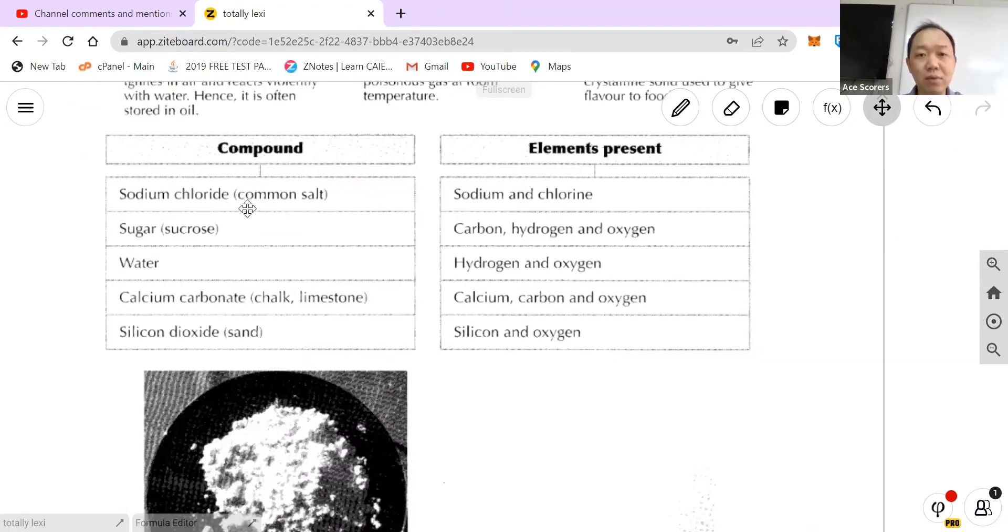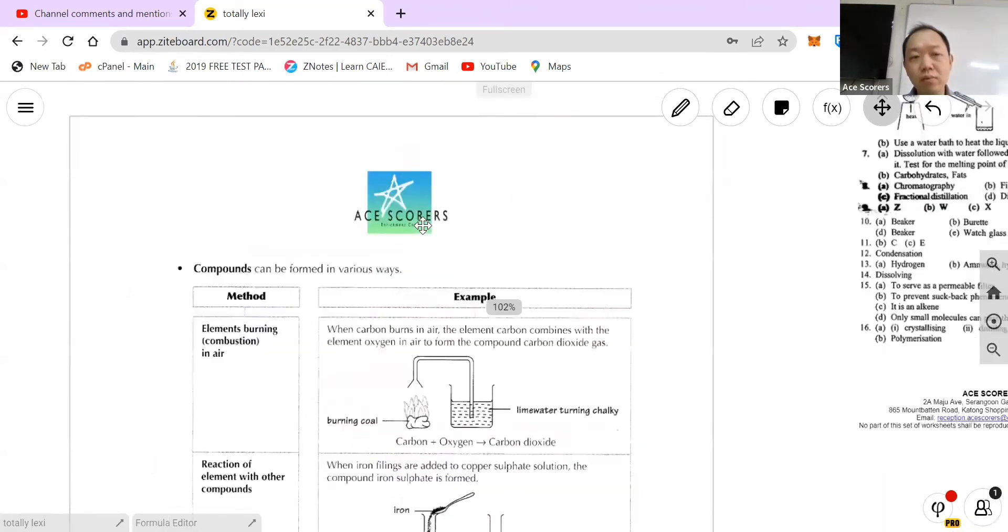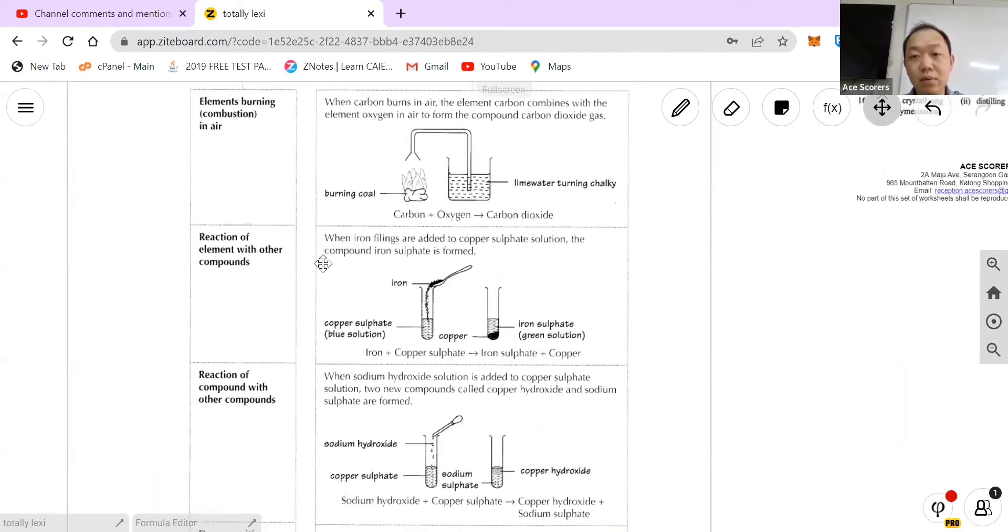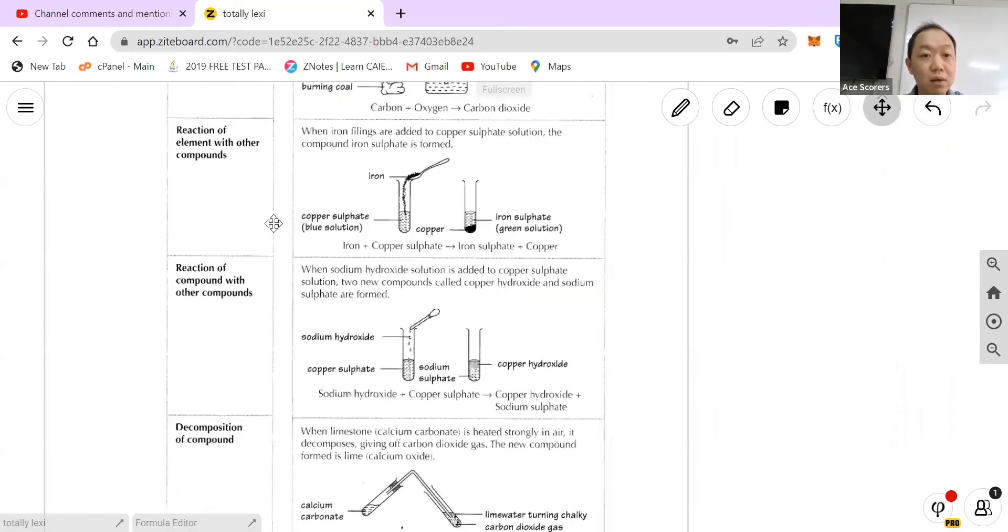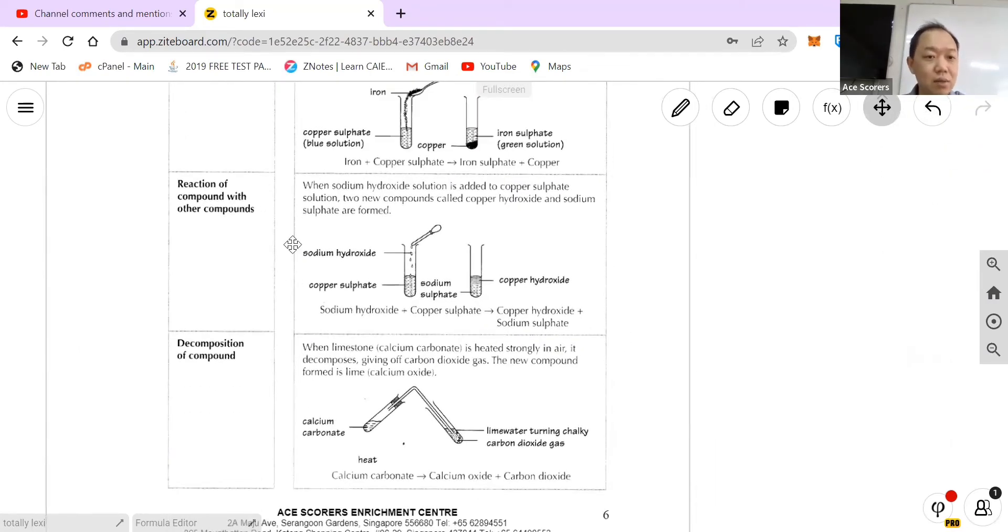Here are some examples: sodium chloride which is made out of sodium and chlorine, sugar, water, calcium carbonate, and sand silicon. How do you form compounds? You can either burn them, react with one compound reacting with another compound, or decomposition.